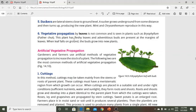Vegetative propagation by leaves is not common, but occurs in plants such as Bryophyllum. This plant has fleshy leaves with adventitious buds present on the leaf margins. When the leaf falls to the ground, the buds grow into new plants.